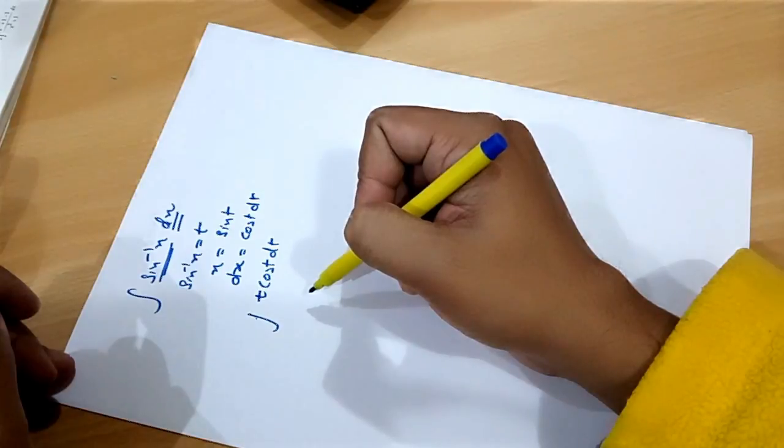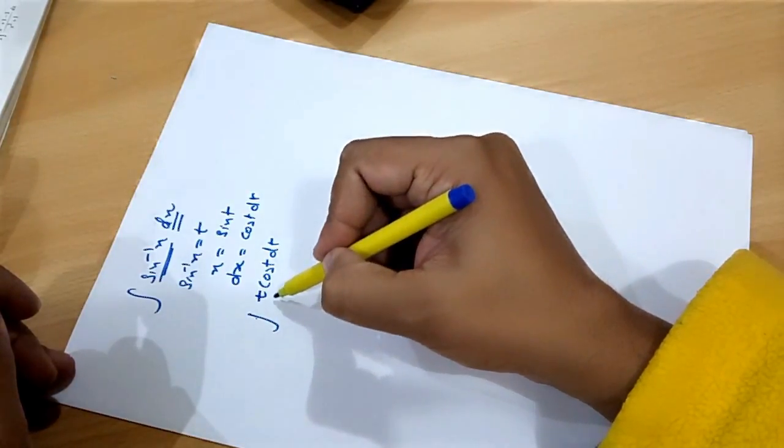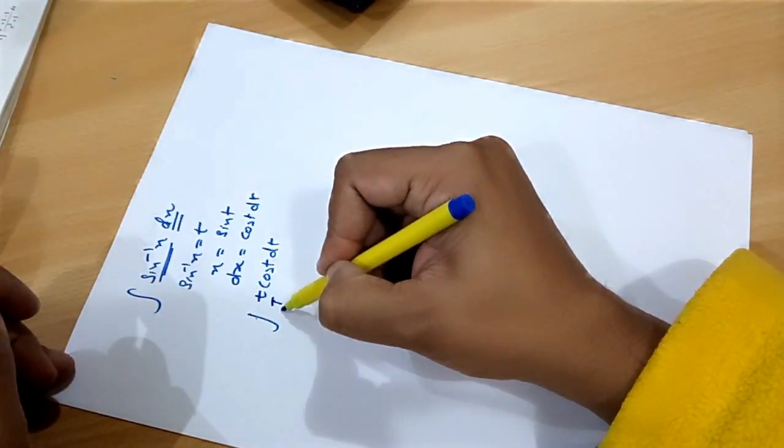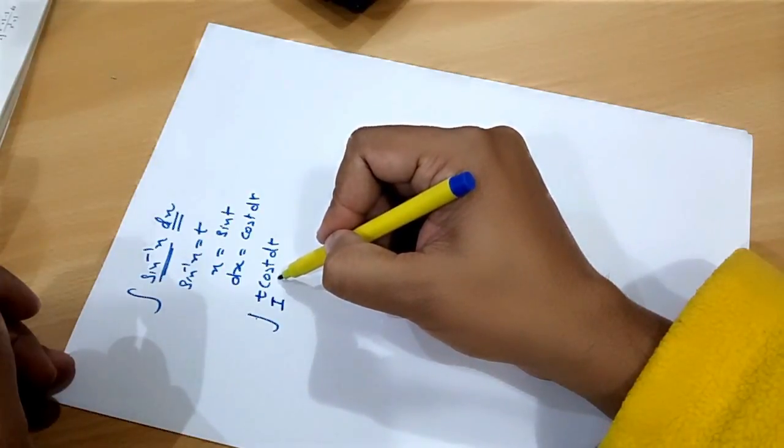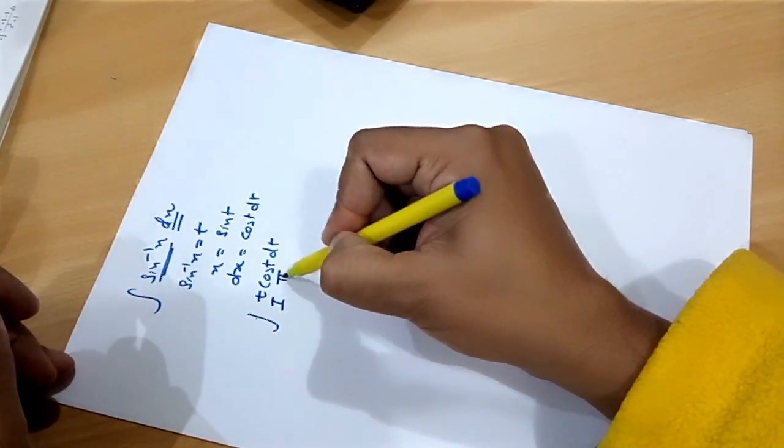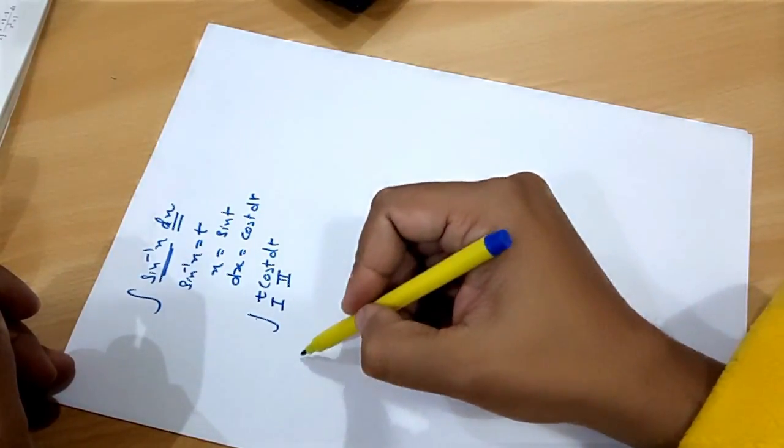Now, we will integrate using integration by parts. So, we will take t as the first function and cos t as the second function.